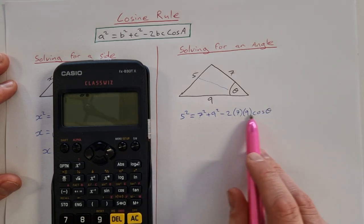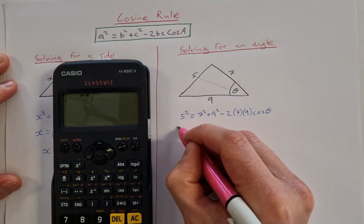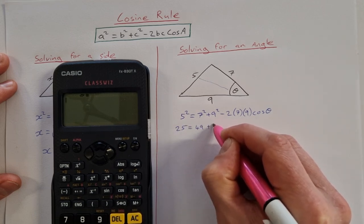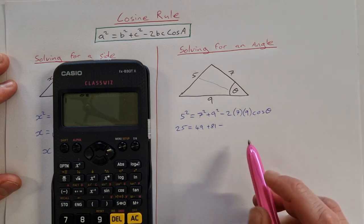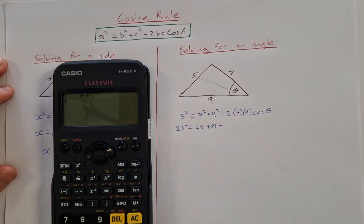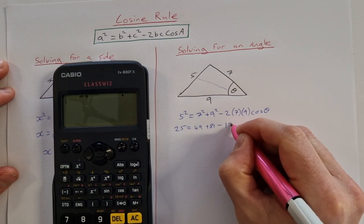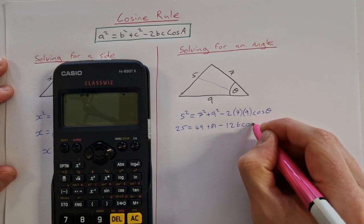Now we can go and just tidy this up a bit and say 25 is equal to 49 plus 81 minus, we can say 2 times 7 times 9 is 126, so minus 126 cos theta.